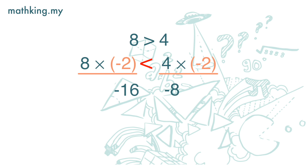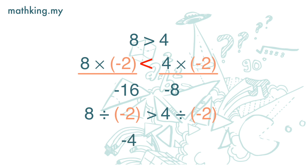The same case applies for division by a negative number. If we divide both the left-hand side and the right-hand side by negative 2, we get negative 4 on the left-hand side and negative 2 on the right-hand side. Negative 4 is less than negative 2, so 8 divided by negative 2 is less than 4 divided by negative 2. We need to reverse the symbol to become less than.